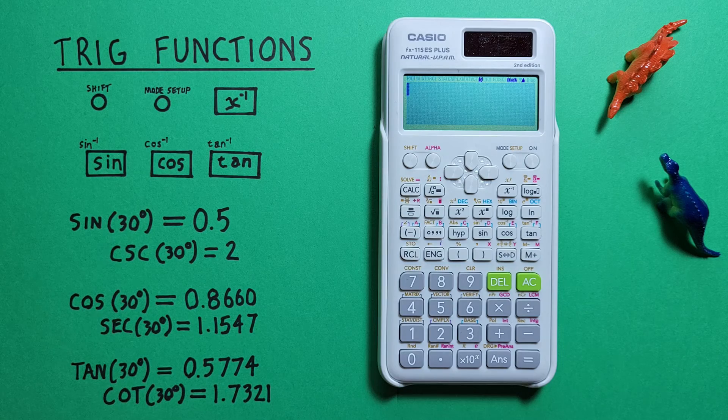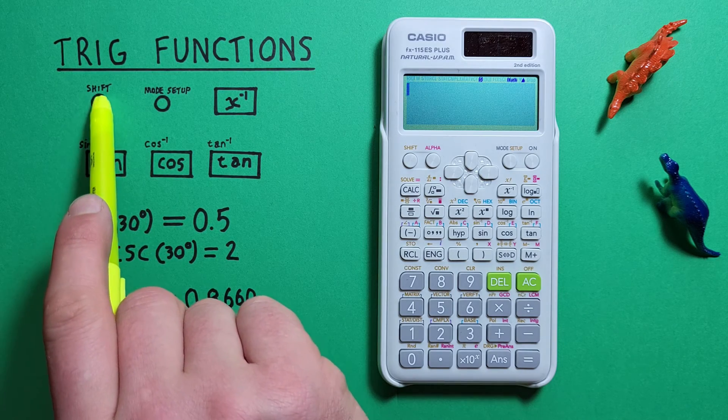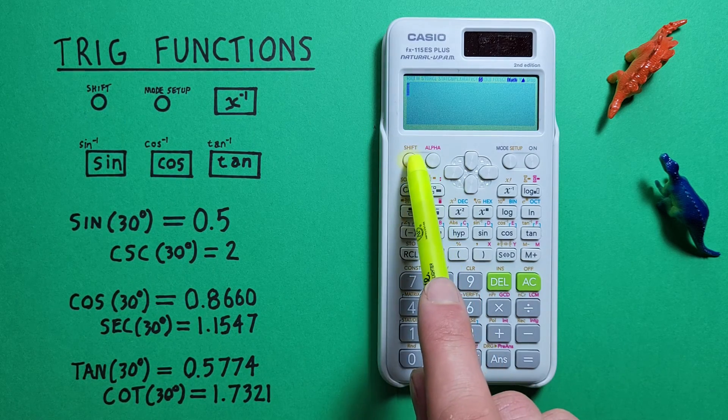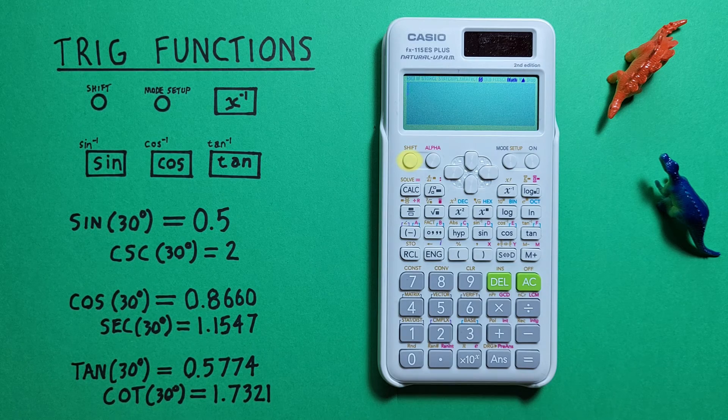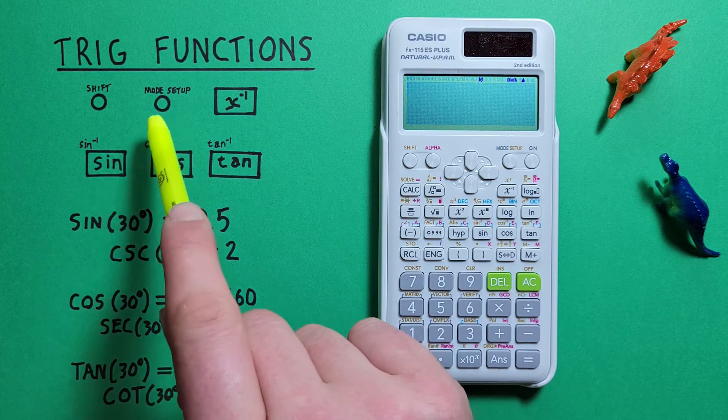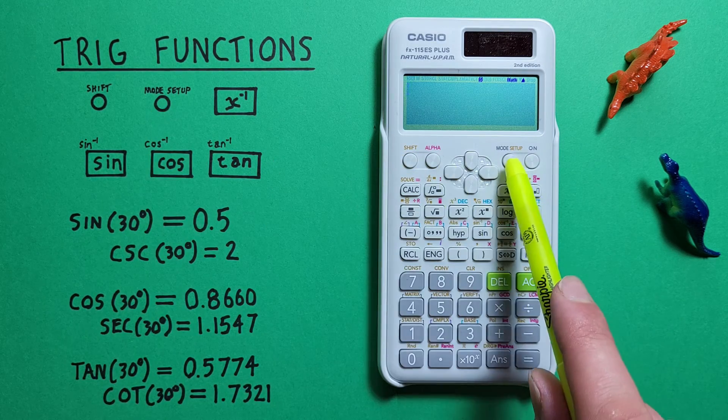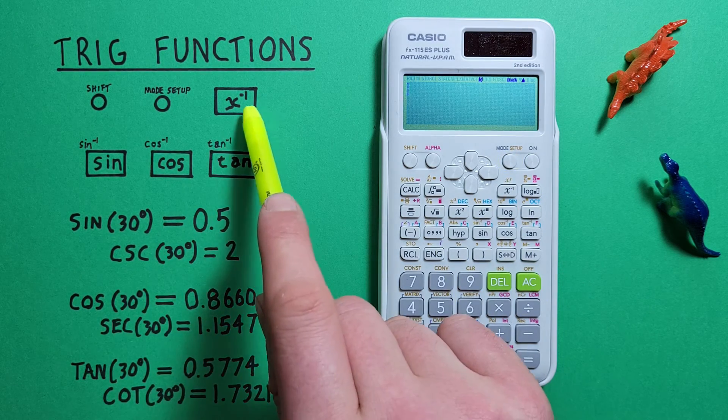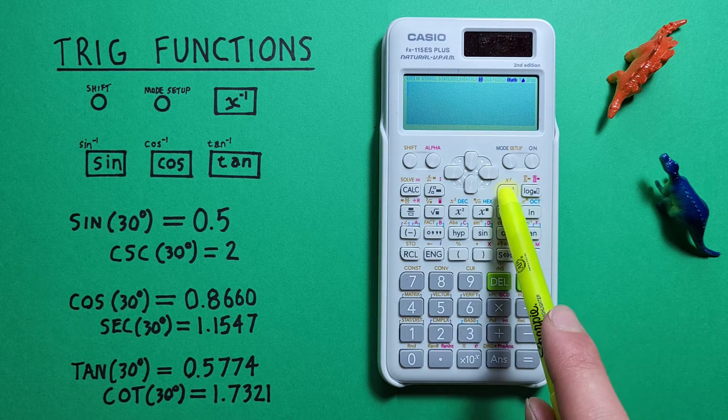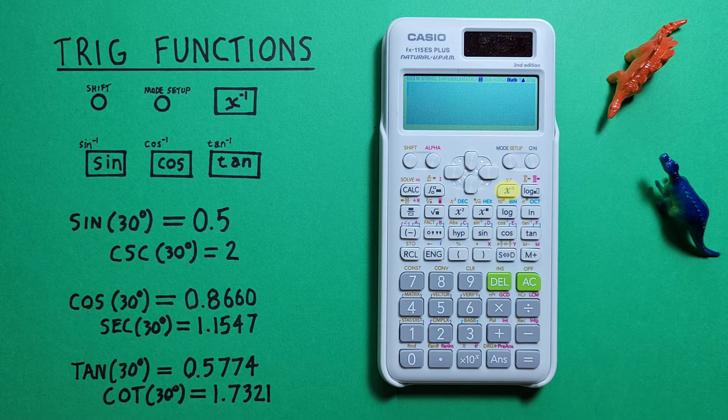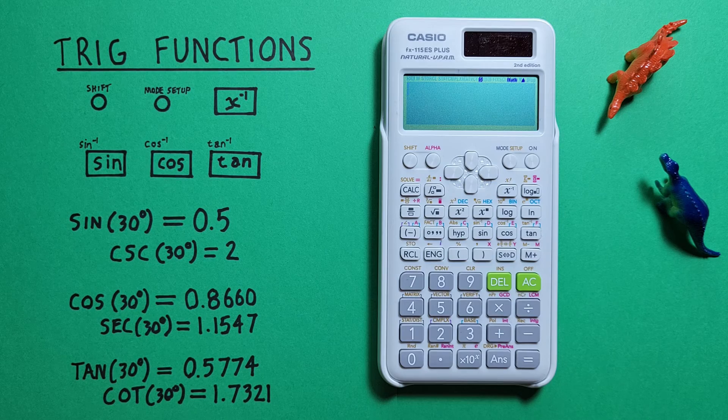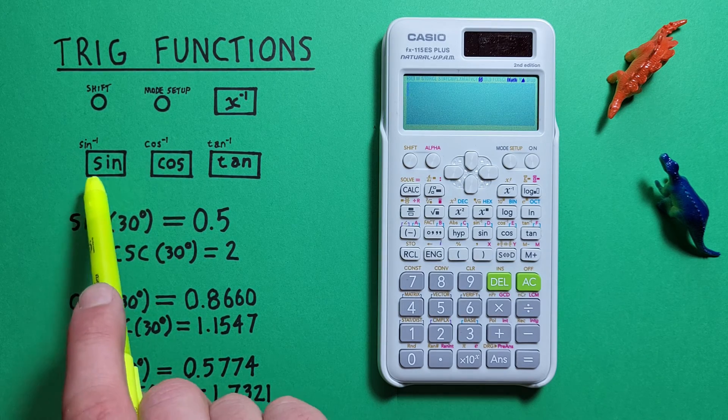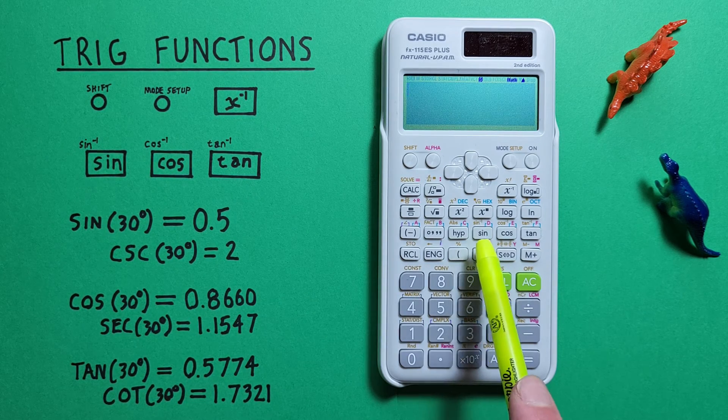To do this we'll use the shift key that looks like this located here, the mode setup key that looks like this located here, the inverse key that looks like this located here, as well as the sine, cos, and tan keys that look like this located here.